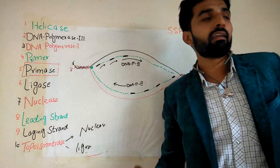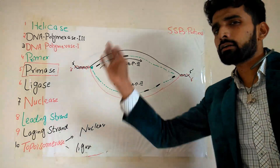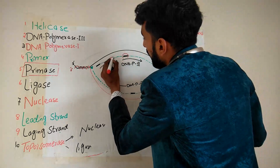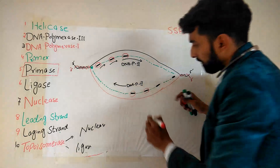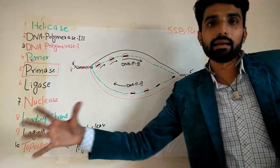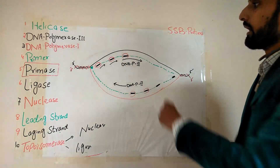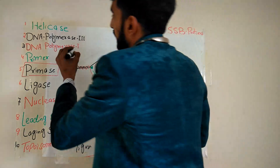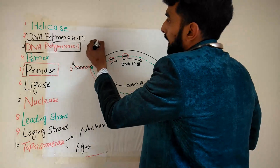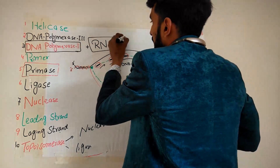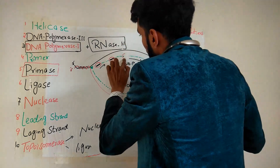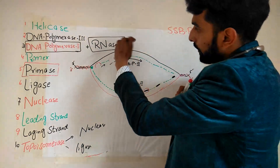Still there is a problem. Initially, I defined that replication must produce an exact replica. But here we can see that RNA segments called primers are present, while in the parent strand no RNA fragment is present. So these fragments have to be removed to complete replication. The removal of these primers is done by DNA polymerase 1 with the help of another enzyme called RNase H. RNase H is responsible for removing these primers from the lagging strand.